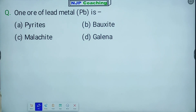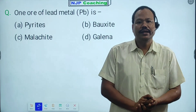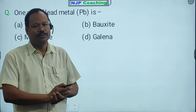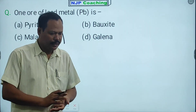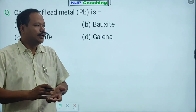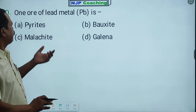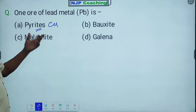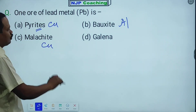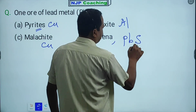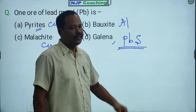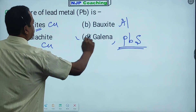Next question: one ore of lead metal. The symbol for lead is Pb. The ore of lead is galena, with the formula PbS — lead sulfide. So the right answer is D.